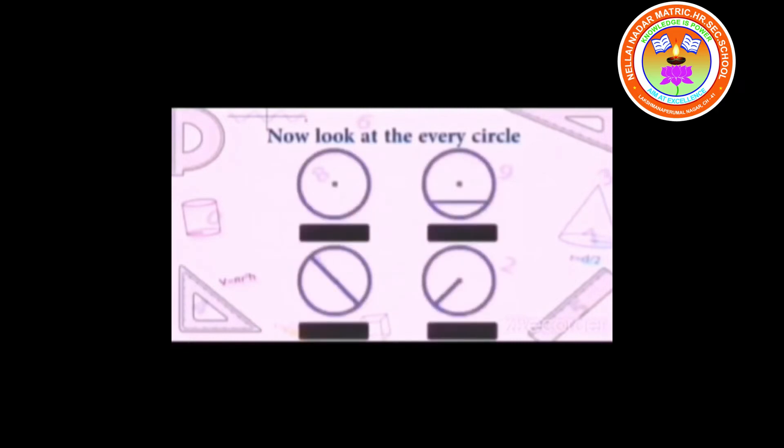Now, look at every circle. The first circle shows the center, second shows the chord, third circle shows the diameter and fourth shows the radius.